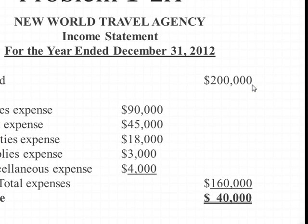$200,000 in revenue minus expenses of $160,000 equals $40,000 net income. So this company seems to be doing fairly well for this particular period.